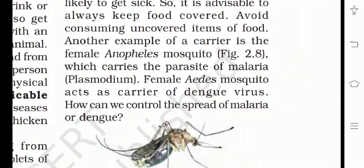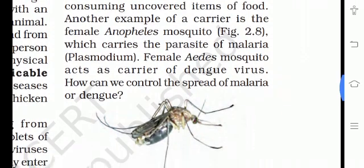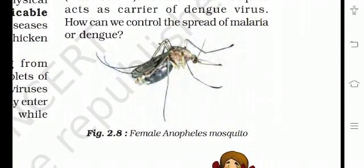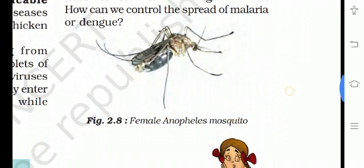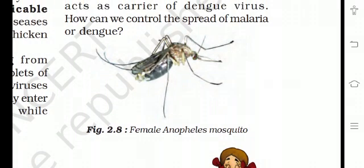Another example of a carrier is the female Anopheles mosquito, which carries the parasite of malaria. Ek aur example hai female Anopheles mosquito, jo malaria ko carry karke laata hai. Female Aedes mosquito acts as a carrier of dengue virus — Aedes mosquito dengue virus ko carry karke laata hai. Here is a figure of the female Anopheles mosquito. How can we control the spread of malaria or dengue?